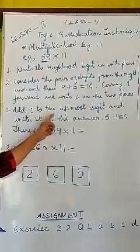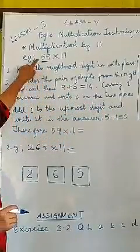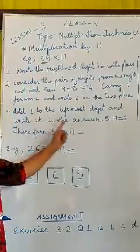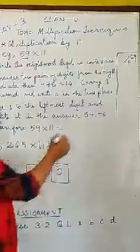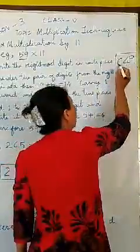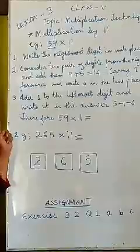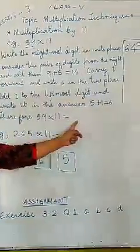Now, step 3 is, add 1 to the leftmost digit. The leftmost digit here is 5. So, let us add 1. 5 plus 1 is 6. And let us write the answer 6 here. So, we can find the answer easily like, 59 into 11 is 649.